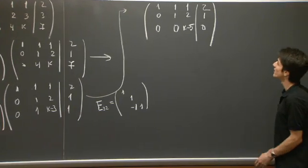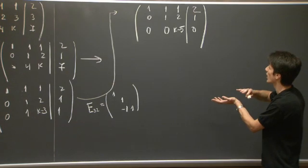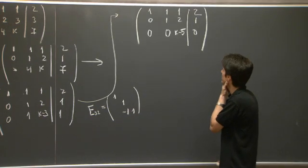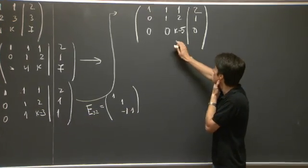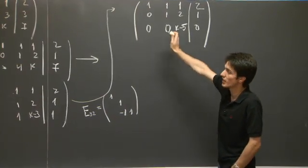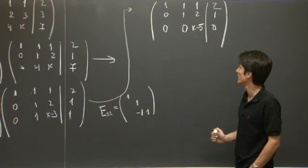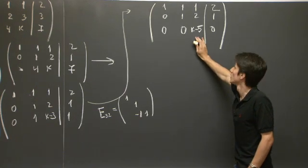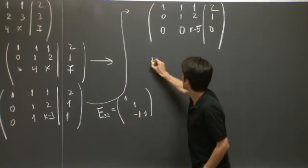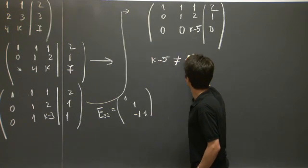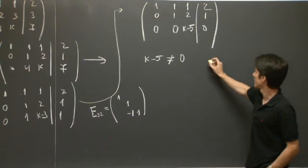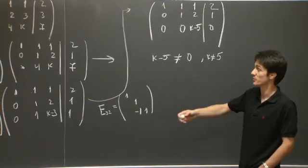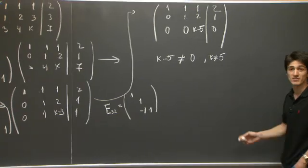So we have the, we got to a matrix which is upper triangular. And we want to figure out for which value of the parameter k is this matrix of full rank. Well, this pivot is, this is a pivot, this is a pivot, and we want this one to be a pivot as well. And that happens when k minus 5 is not 0. So when k is different from 5, the matrix A is full rank. And therefore, the system Ax equals 237 has a unique solution.